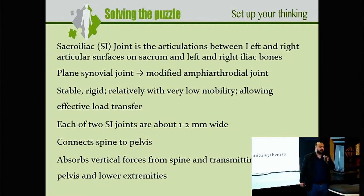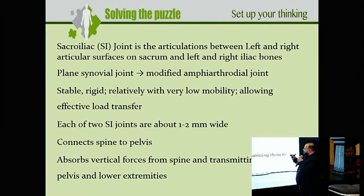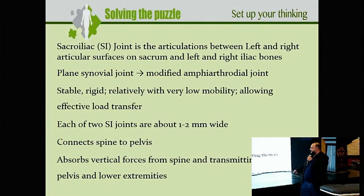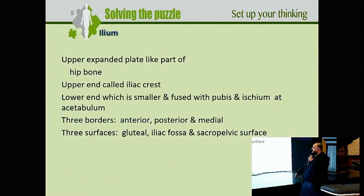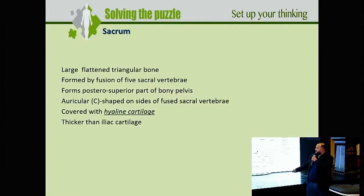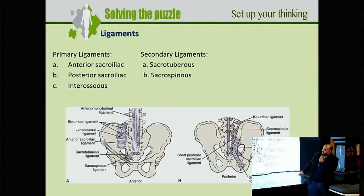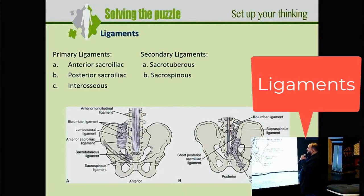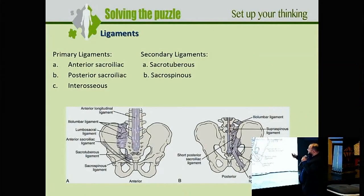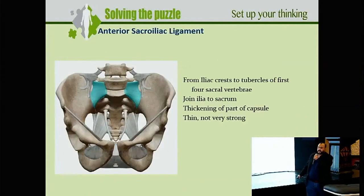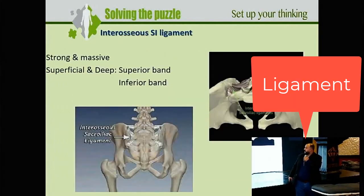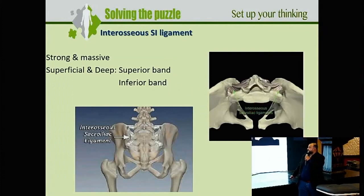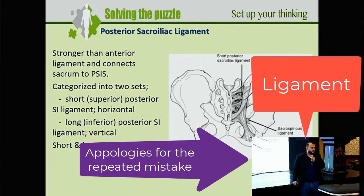Each sacroiliac joint transfers load with about one to two millimeters of movement, connecting the spine to the pelvis. The primary ligaments include the anterior sacroiliac joint, the posterior sacroiliac joint, and the interosseous sacroiliac joint — which is the strongest. The anterior sacroiliac joint is the weakest, and the posterior is stronger than the anterior.